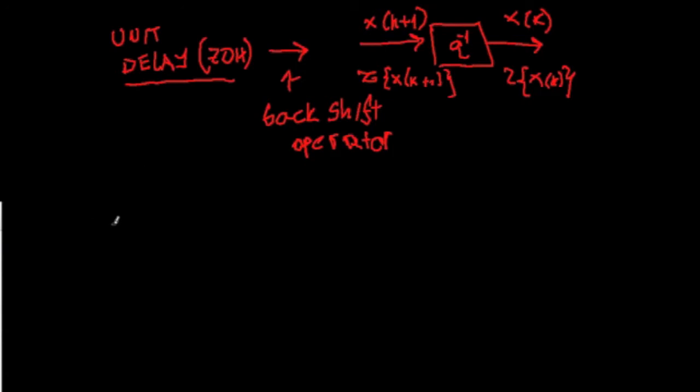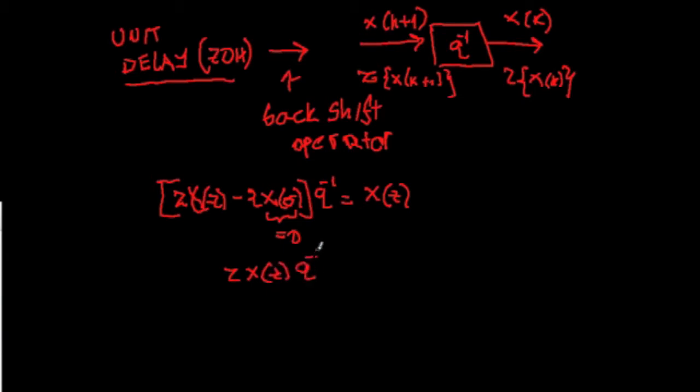So what do we get? We get the following, that z-transform x(k+1) is going to be z·x(z) minus z·x(0). And if this is applied to the q^(-1) operator, it yields x(z). In other words, if we take that x(0) is equal to 0, we will obtain z·x(z). This leads to the conclusion that q^(-1) operator is equal to 1 by z.